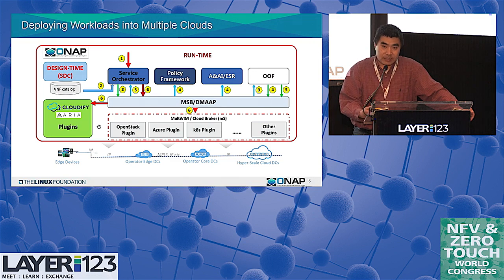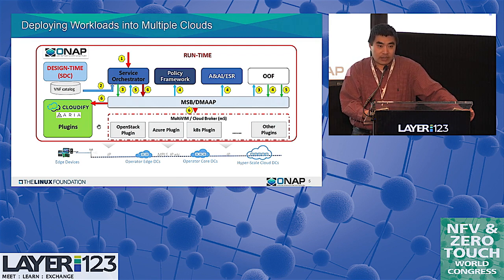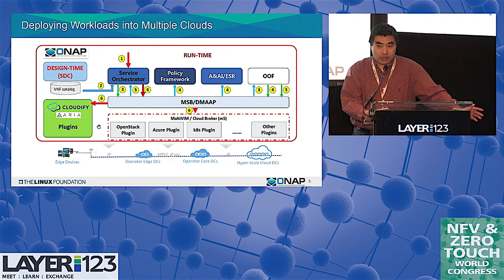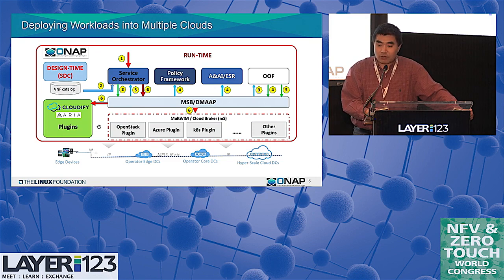After the VNF is instantiated, the application controller, AppC, takes over control, gets information, and the AAI monitors the status, utilization, usage, and performance. Through the DCAE collectors, and based on status, it may need to reboot, scale, or perform other actions for managing the lifecycle of the VNF until it reaches end of life and needs to be terminated. That is basically how it works in ONAP.